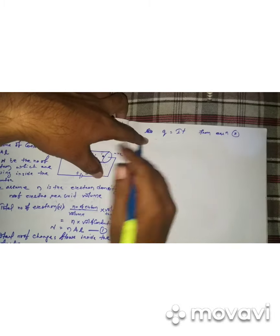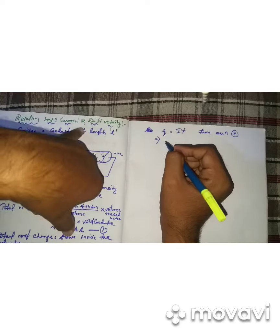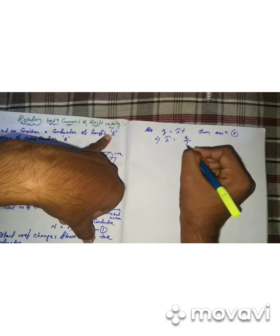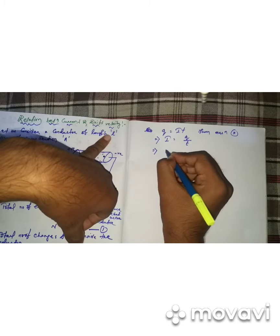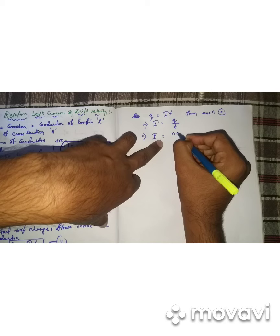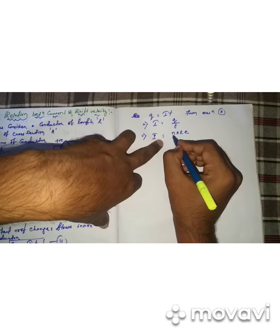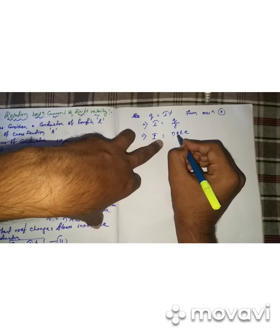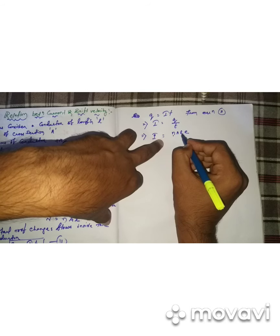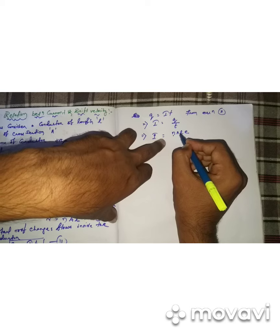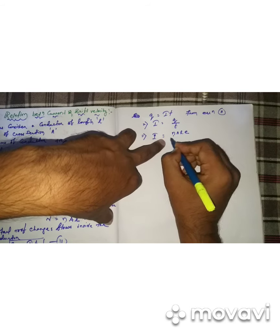Now we have to calculate the relation between current and drift velocity. Therefore, I equals Q divided by t. Here Q equals nALe, where small n is the number of electrons per unit volume, A is the area of the conductor, L is the length, and e is the charge of the electron. So I equals nALe divided by t.